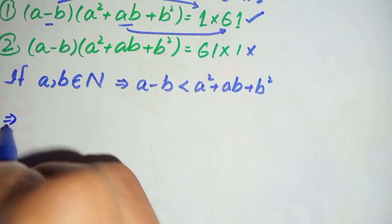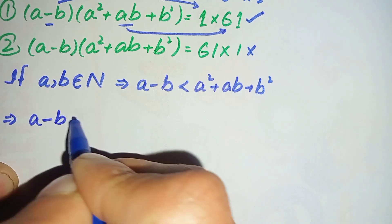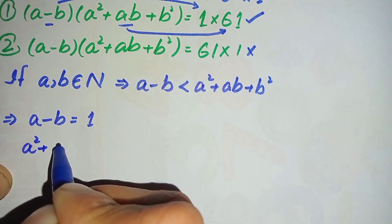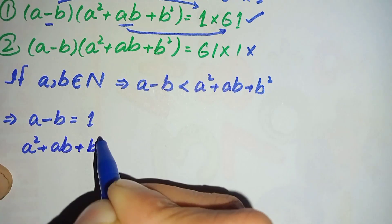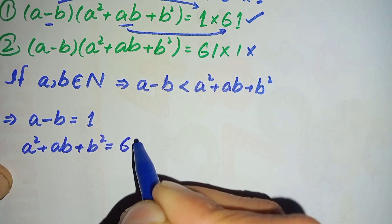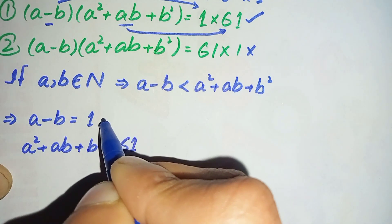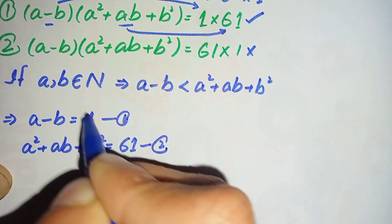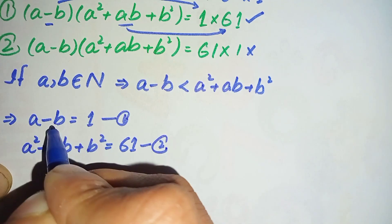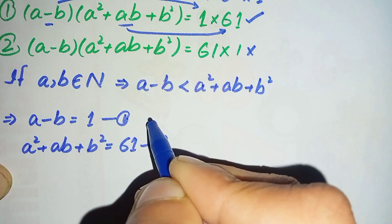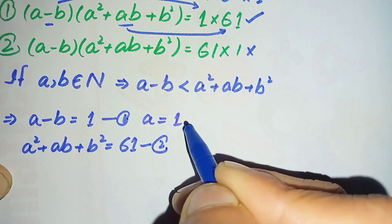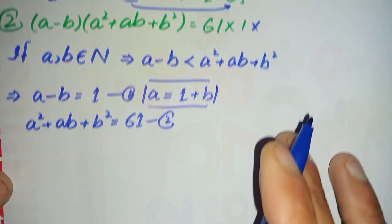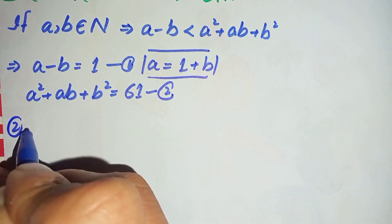From the valid case, we get two equations: equation one, a minus b is equal to 1, and equation two, a square plus a times b plus b square is equal to 61. From equation one, we rearrange to get a is equal to 1 plus b. We will substitute this into equation two.